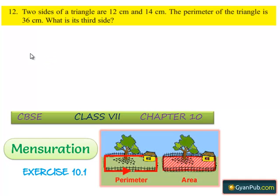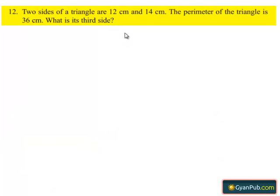Moving on to the twelfth question. Given that two sides of a triangle are 12 cm and 14 cm. The perimeter of the triangle is 36 cm. What is its third side?